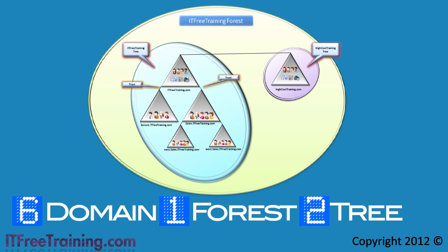So why is there a need to have a forest? All domains in a forest have something in common — they share what is called the schema. The schema defines the Active Directory database. The schema determines what can be stored in the database and the structure of that data. Each domain has its own copy of the database, but it is the schema that determines its design, and the schema is shared between all domains in the forest. When changes are made to the schema, these changes are replicated to every domain in the forest.